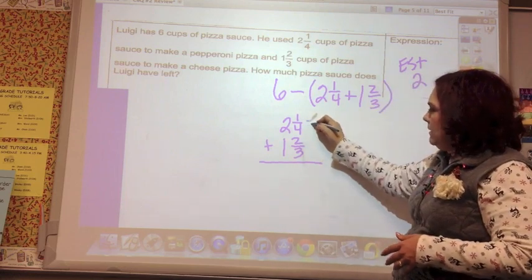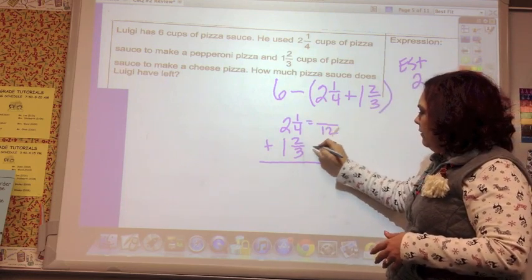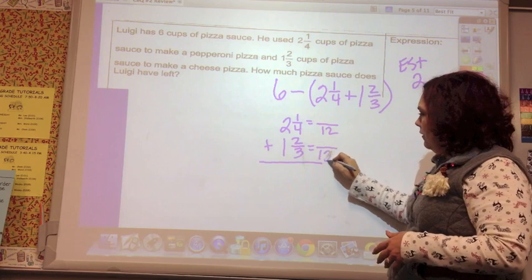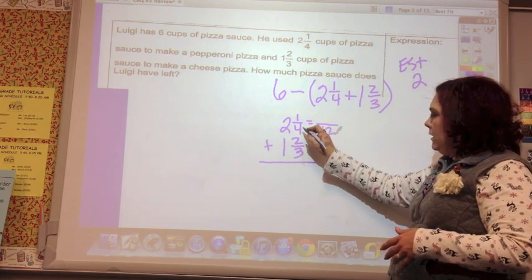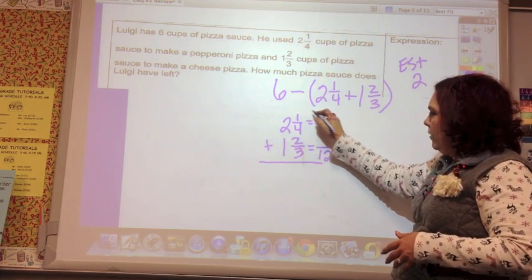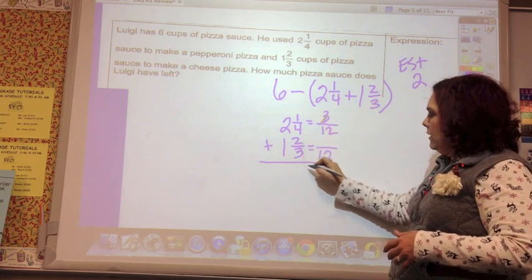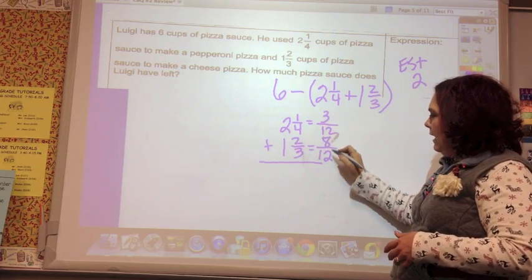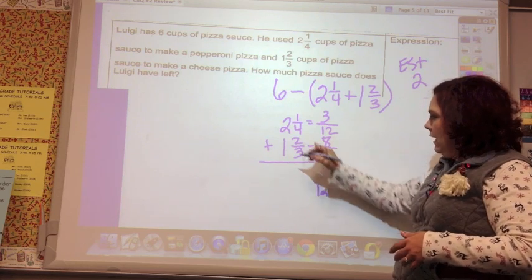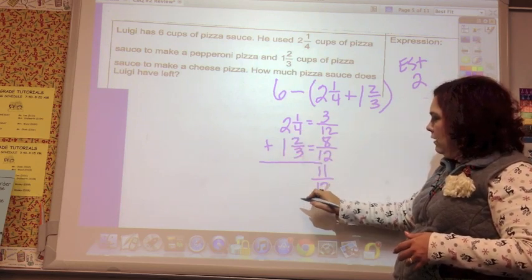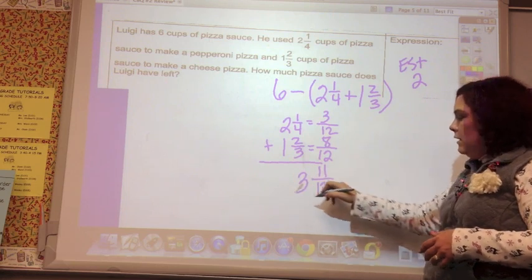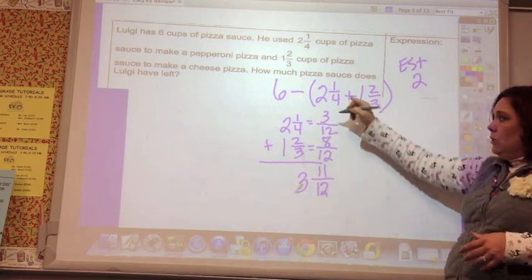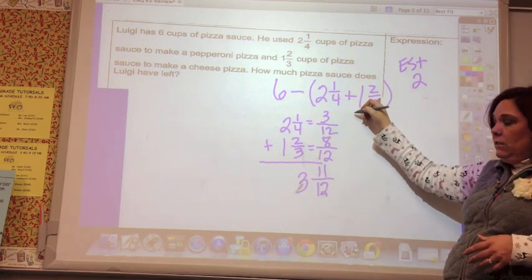My first step is going to be to find a common denominator. Then I'm going to make equivalents. Four times three is twelve, one times three is three. Three times four is twelve, two times four is eight. I'm going to add those, eleven-twelfths, and add this, two plus one equals three. And this would round to four, which is what we said this would estimate to.